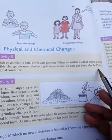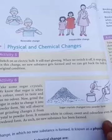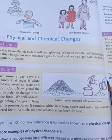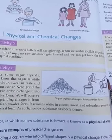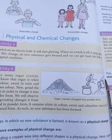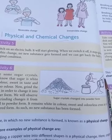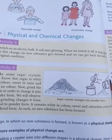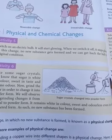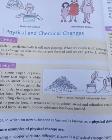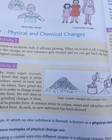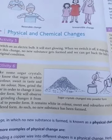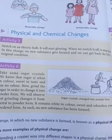So it is a physical change because we got light because of electricity and the current controls the light. But has anything happened to the bulb? No. Switch off the bulb — the bulb goes off. So when you switch on and switch off the bulb, nothing new is formed. This is a physical change.